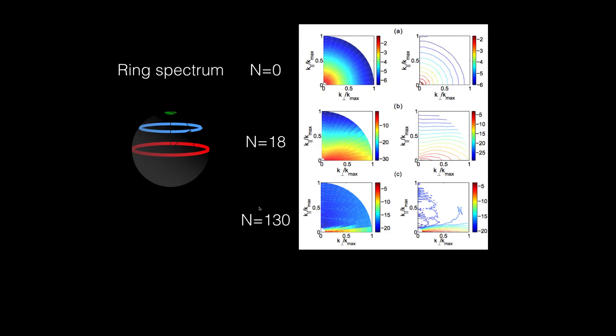We also describe the anisotropy using ring spectrum. The ring spectrum is the sum of energy of the Fourier modes in a ring. For example, this ring, that ring, as a function of theta.